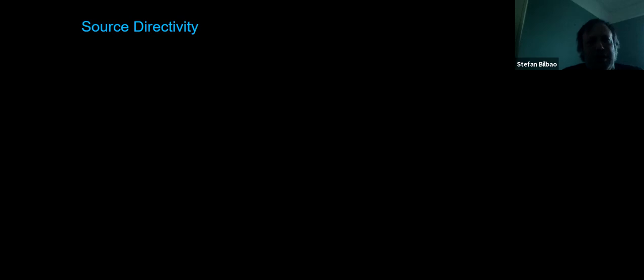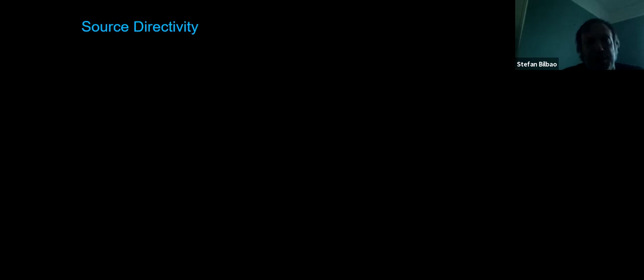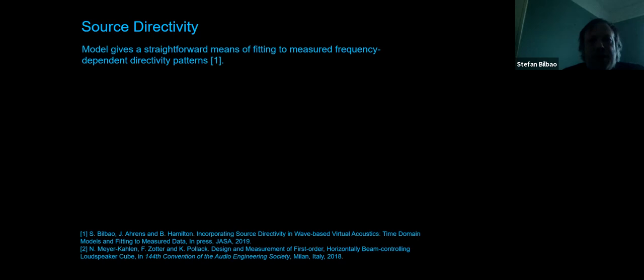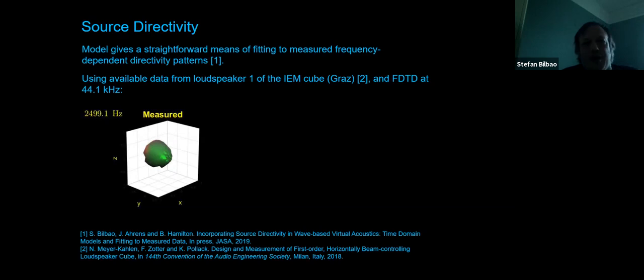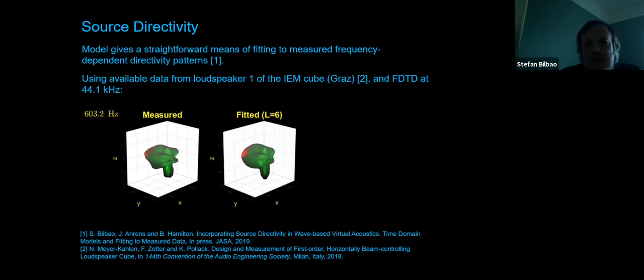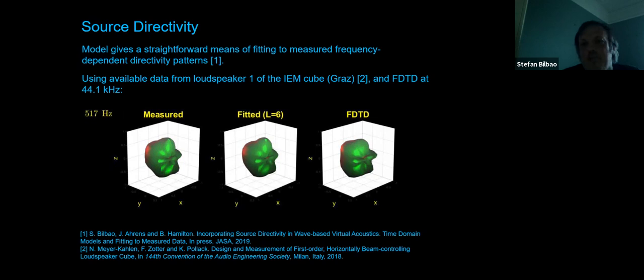In the interest of truly emulating everything, we've gotten very interested in spatial encoding and source directivity. One thing we've tried is incorporating relatively realistic source directivity patterns—for example a measurement from a loudspeaker from Graz—scrolled through as a function of frequency. We fit that down to sixth-order spherical harmonics and reincorporated that into the wave-based simulation, able to reproduce it pretty much exactly.